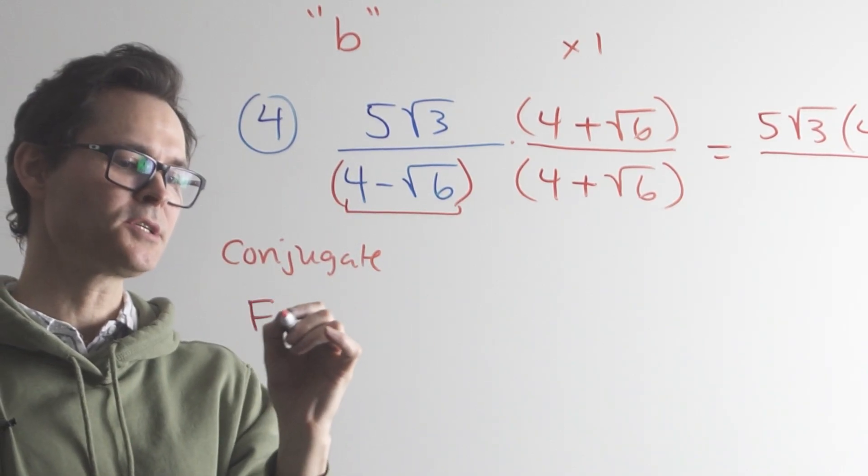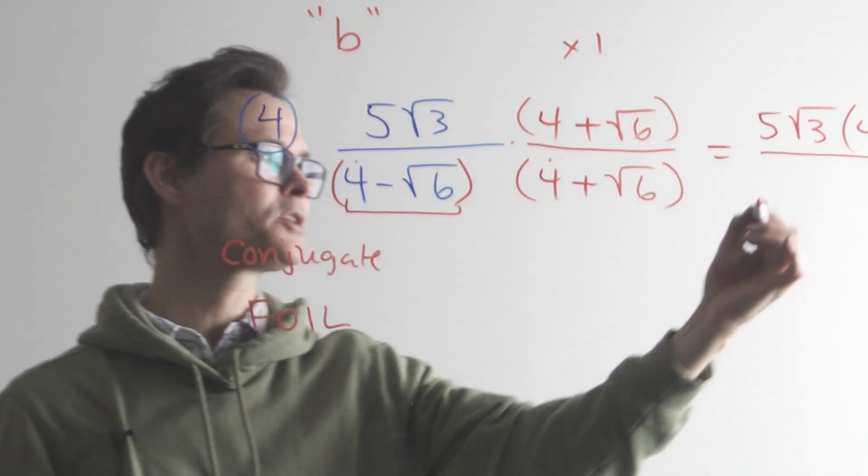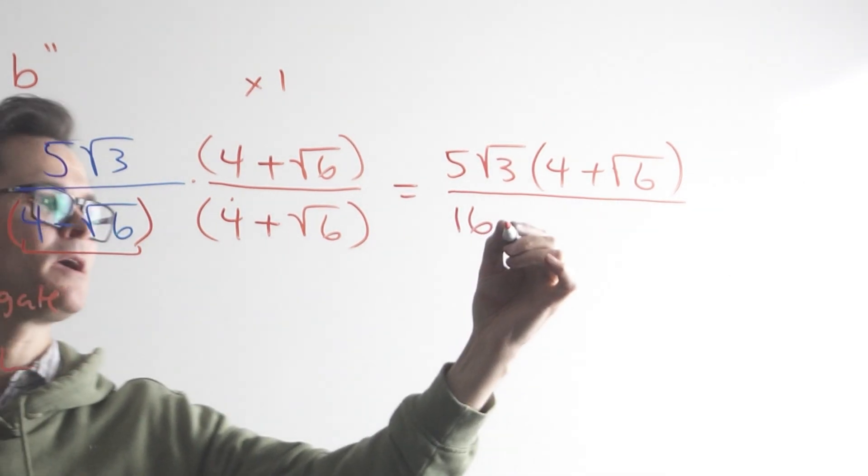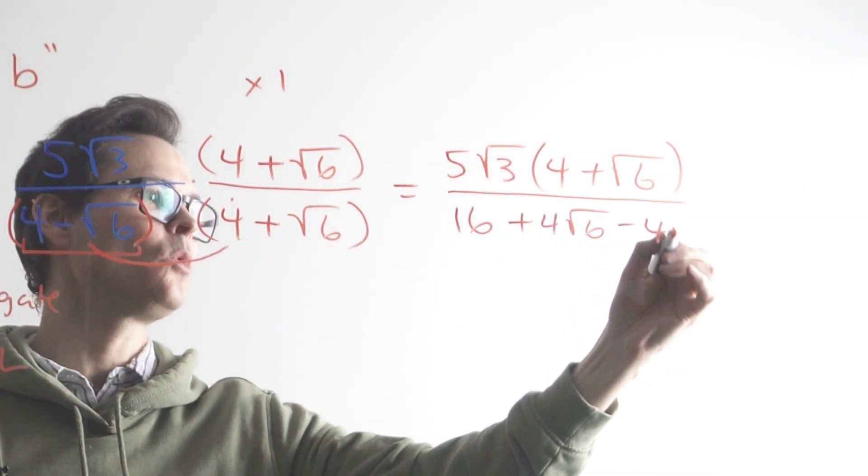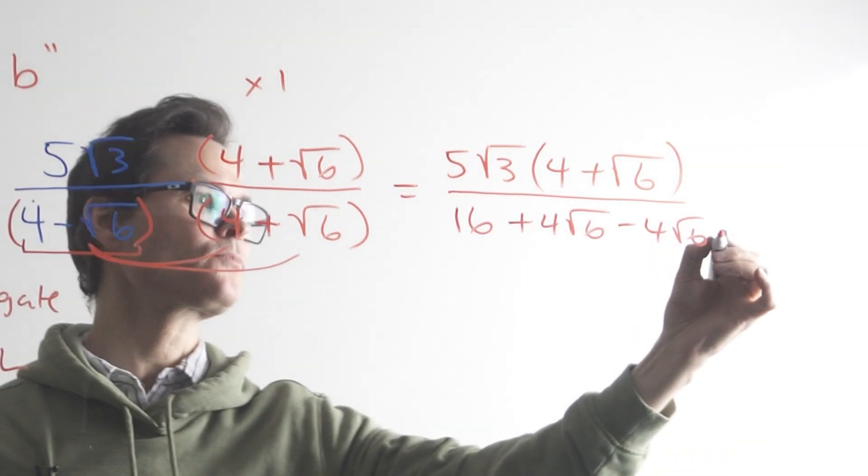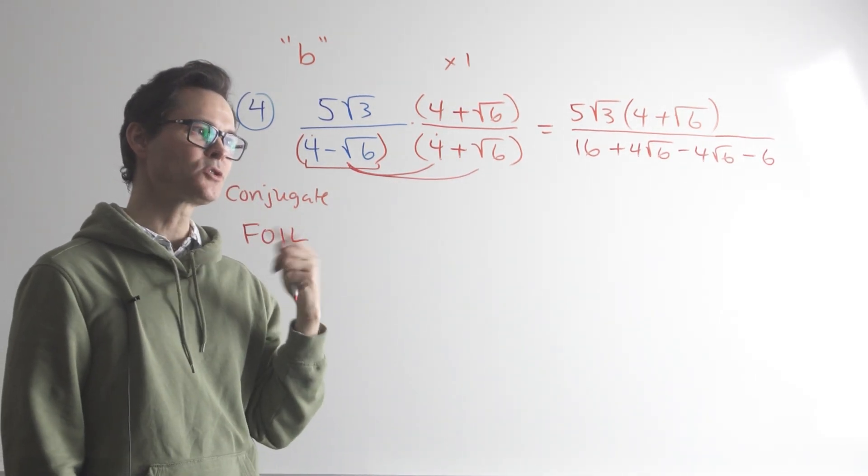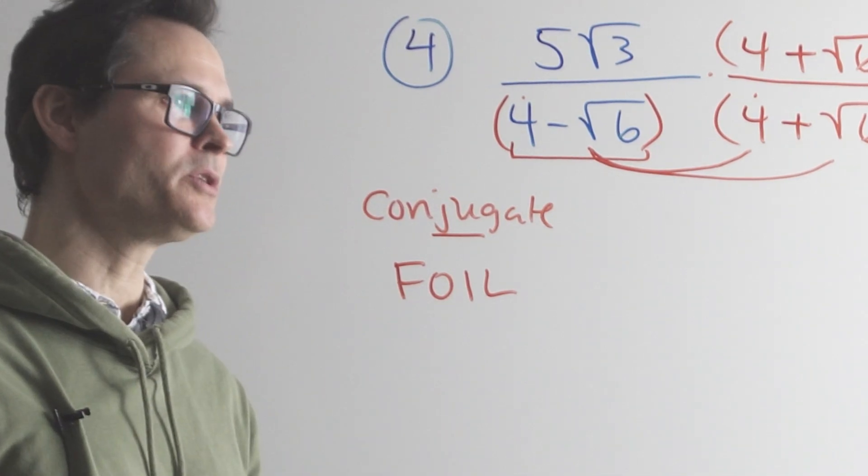So I'm gonna foil it out. So first, outside, inside, last. So foil means first, multiply the first numbers together. Four times four is 16. This is really just like polynomials. Four times root six is positive four root six. And then negative root six times four is negative four root six. And then last, negative root six times positive root six is negative six. So the square root of six times the square root of six is the square root of 36. The square root of 36 is six. What you notice is that these two terms cancel. That's why we use the conjugate. The conjugate will produce that effect.